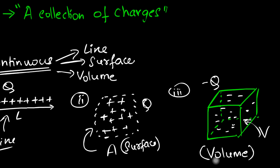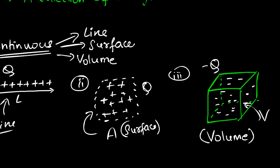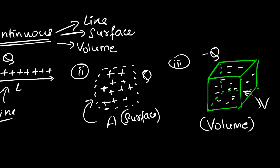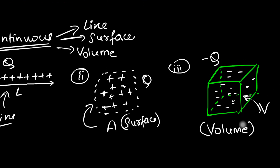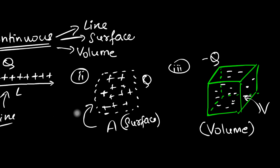The big question is: if you have a continuous charge distribution — whether it's a line, surface, or volume — how do you calculate the electric field at any point? I'm not going to show that here; the best way is to work out an example, which we'll do in the next video.